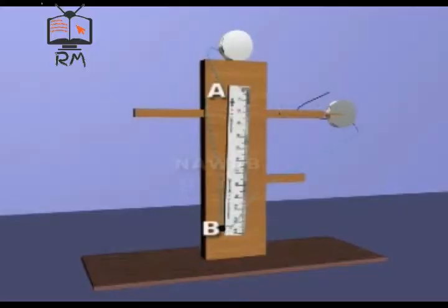Note the position B on the bar at which the bob has touched it. Note the difference between position A and position B. It is the distance h which the bob has covered while falling freely.